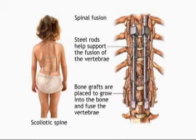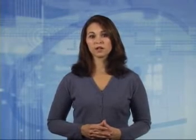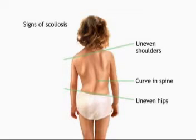Many times the first sign noticed by the parent of a child with scoliosis is ill-fitting clothing, most specifically uneven hemlines. As the curvature becomes more pronounced, more signs and symptoms appear, such as uneven shoulders or shoulder blades, protruding scapula with one side of the back higher than the other, unequal arm-to-body spaces or protruding hip, hip and/or buttock asymmetry, unequal leg lengths, or malaligned trunk or pelvis.